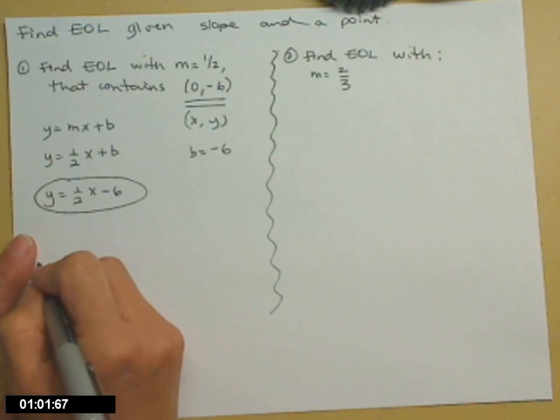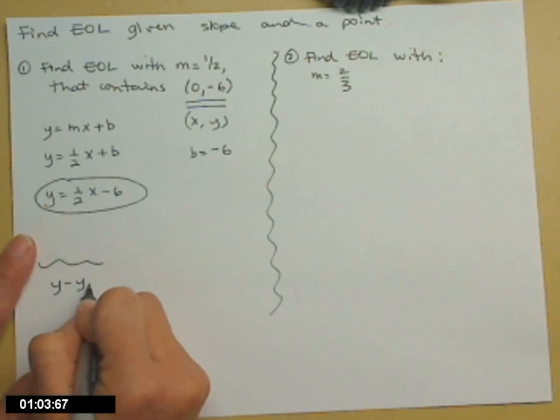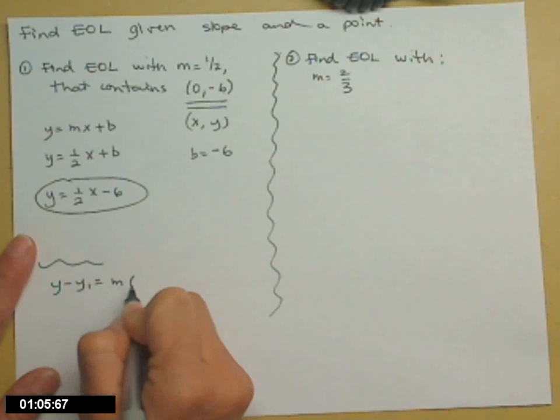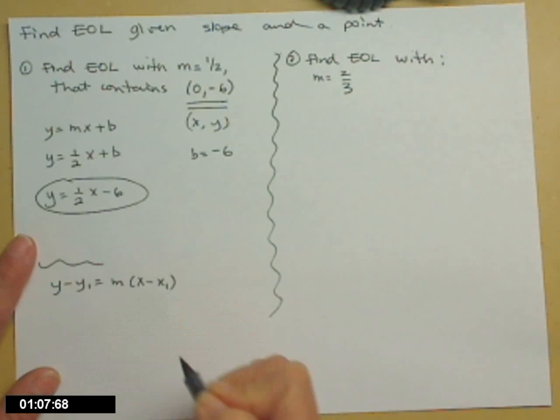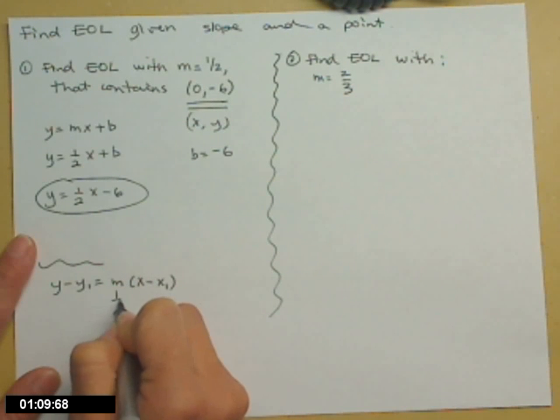The other option would be to use that line-finding tool: y minus y₁ equals m times (x minus x₁). Put 1/2 in for m.